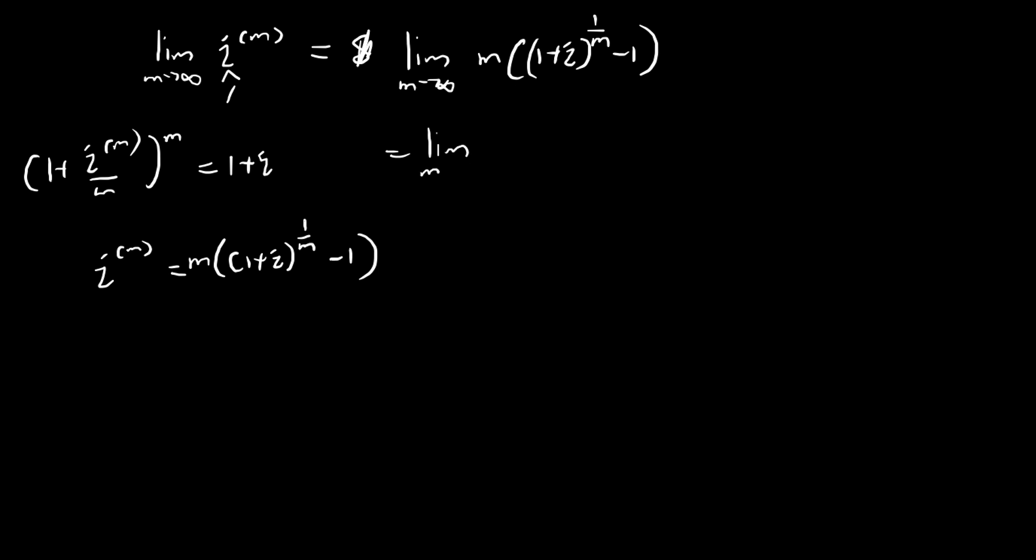So we can rewrite this limit as this. And we're going to do a bit of rearranging. And I see that as m tends to infinity this term tends to zero, so this essentially we have a zero over zero limit.